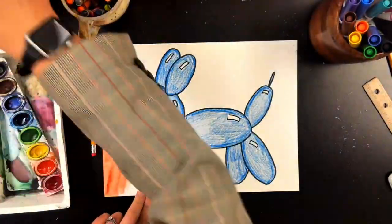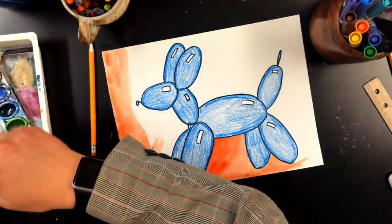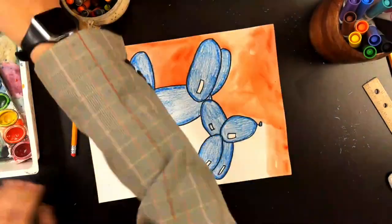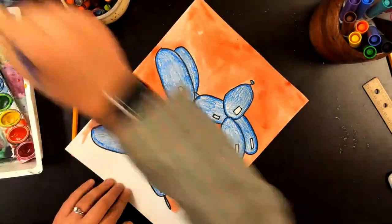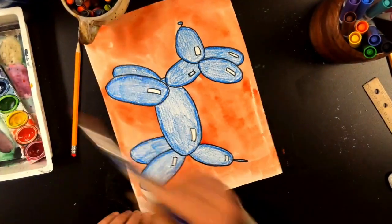And when we have it all colored in you could decide what you want to do with your background. I decided to paint the whole thing orange. You could color it in, you could put your dog in the scene, put it in a place, it's up to you.